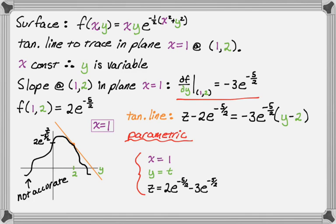But now, when we get to y, we replace it with t, because y is equal to t. And for this line, if we say that t is an element of the reals, there you go. We've got our tangent line to the trace in the plane x equals one. We know that it has a slope of partial y, which was negative 3e to the negative five-halves. And that's what we set out to do.